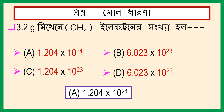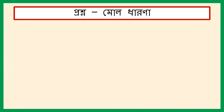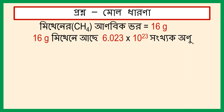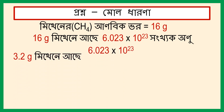Uttorer bakkati amra paras slide e dekhbo. Amra jani je methane-er anovik vat shaman 16 gram. 16 gram methane-er anovik 6.023 into 10 to the power 23. So 3.2 gram methane-er anovik = 6.023 × 10 to the power 23 divided by 16, multiplied by 3.2.